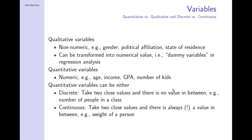To finish this lecture, let me say something about variables. Variables can be quantitative, qualitative, or discrete versus continuous. Qualitative variables are non-numeric and describe a particular qualitative characteristic of the unit of analysis. For a person, a qualitative variable would be gender, political affiliation, or state of residence. In regression analysis, we can transform those qualitative variables into numerical values — we will call them dummy variables.